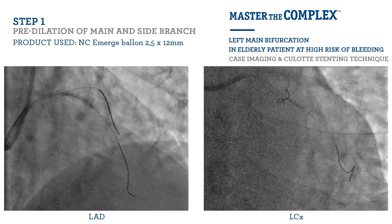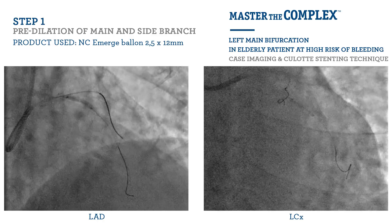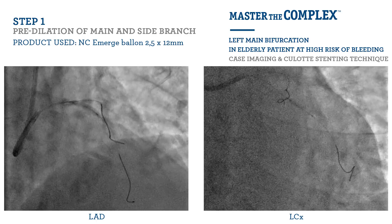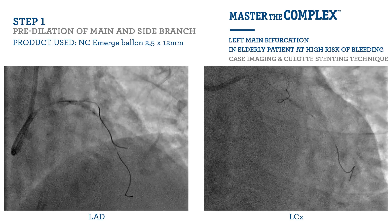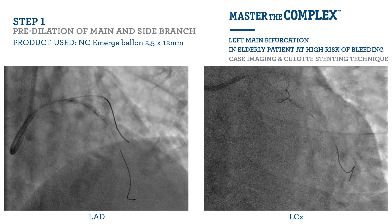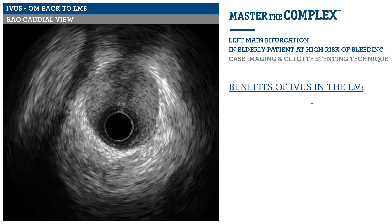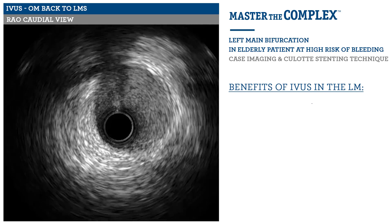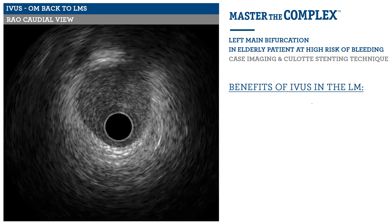We took an EBU 3.5 guide catheter and placed wires in both the LAD and the obtuse marginal arteries. The first step performed was to pre-dilate both limbs prior to intravascular imaging, using a 2.5 mm non-compliant eMERGE balloon given the calcified nature of the disease. Pre-dilation allowed us to pass an OptiCross 40 MHz IVUS catheter into the left circumflex and the obtuse marginal arteries.